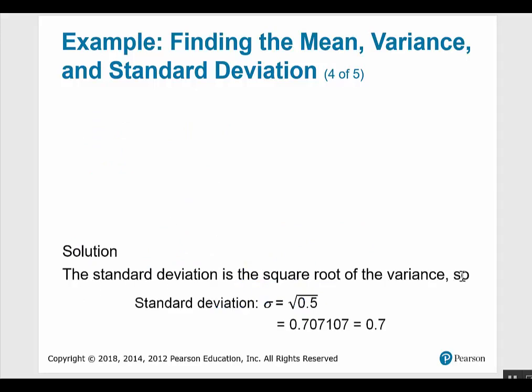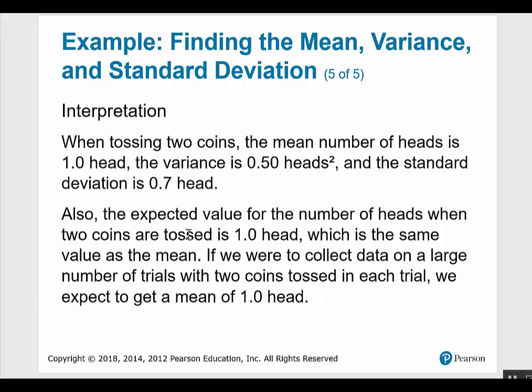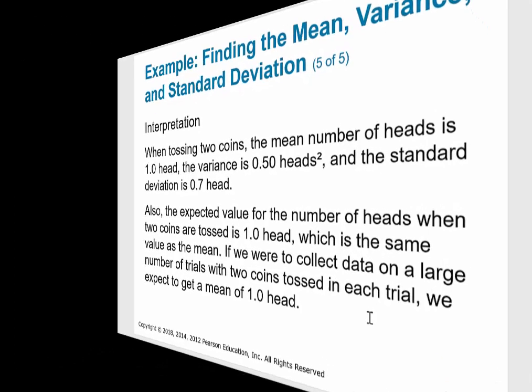Standard deviation is the square root of the variance. Interpretation: when tossing two coins, the mean number of heads is 1, the variance is 0.5 heads squared, and the standard deviation is 0.7 heads — which is why we use the standard deviation instead of the variance for interpretation. The expected value for the number of heads is also 1, the same as the mean. If we were to collect data on a large number of trials with two coins tossed in each trial, we would expect to get a mean of 1 head.